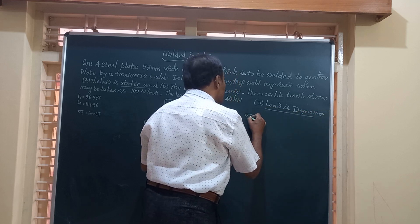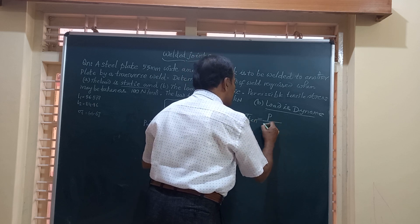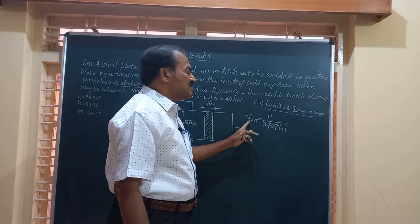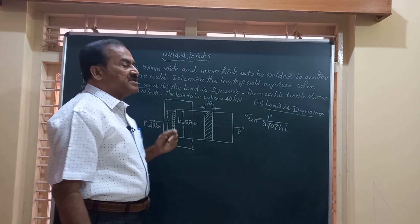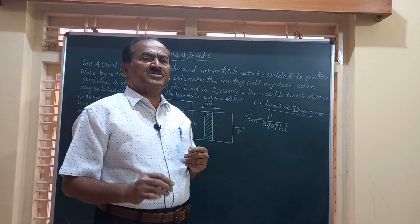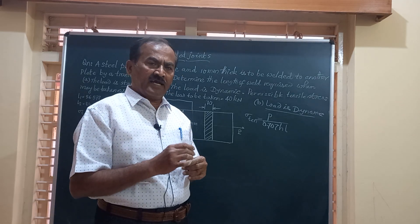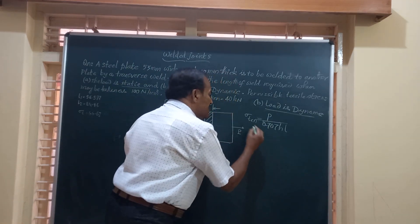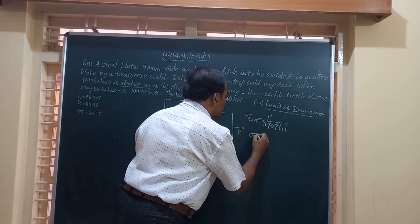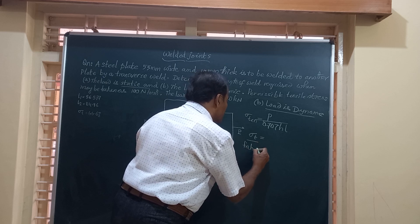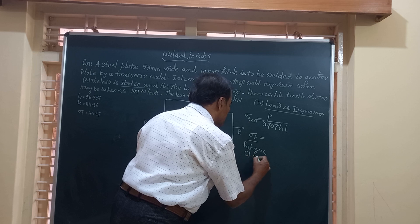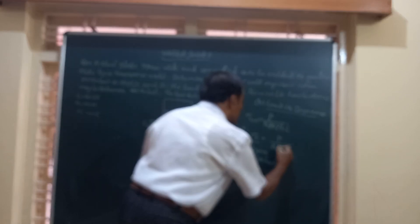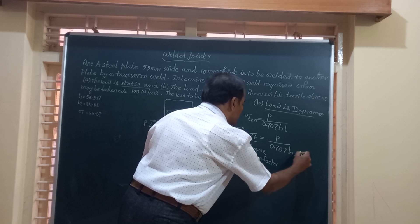We use the same formula: sigma tensile is equal to P divided by 0.707 H into L, but there is a small change. That is, here, whatever the value of sigma T, that is to be divided by a fatigue stress concentration factor, which is obtained from machine design data handbook. And for a normal weld or a transverse weld, that factor is 1.5. So write down here: the sigma tensile is sigma T divided by fatigue stress concentration factor, that is equal to P divided by 0.707 H into L.